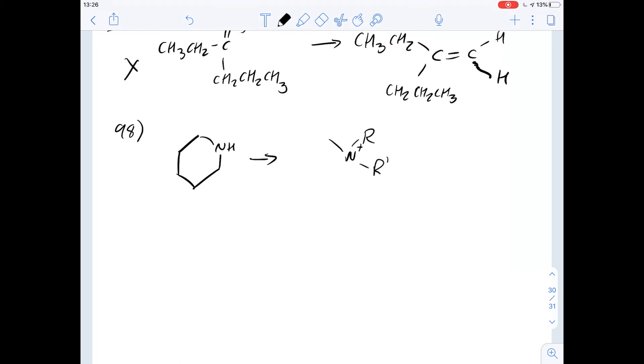So what we could do is just draw it out as N plus, and then we've got these two groups here, R and R prime that is bonded to. And we can draw in the rest of the carbon ring here.